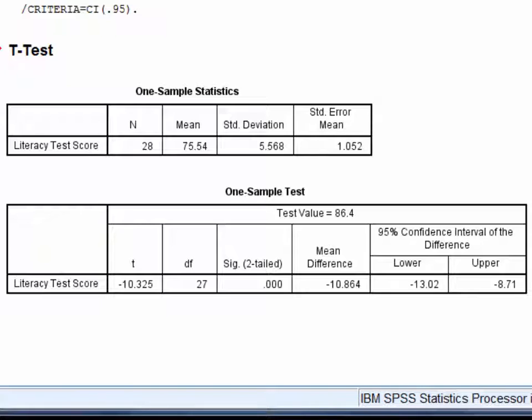In other words, there is a statistically significant difference between our sample mean of 75.54 and the test value, which is the national average literacy score of 86.4. The raw difference between these two values is negative 10.864, which is displayed in the mean difference column. And the 95% confidence interval around that mean difference ranges from negative 13.02 through to negative 8.71.